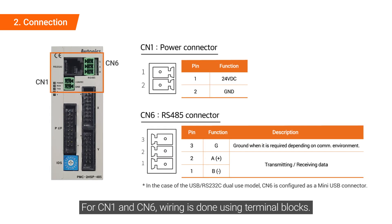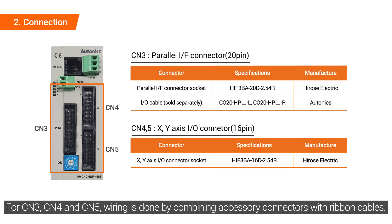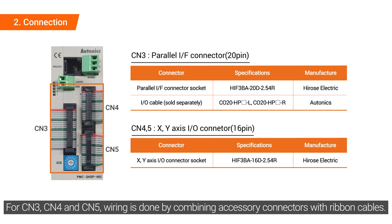For CN1 and CN6, wiring is done using terminal blocks. For CN3, CN4, and CN5, wiring is done by combining accessory connectors with ribbon cables.